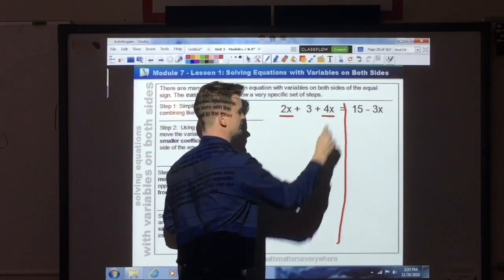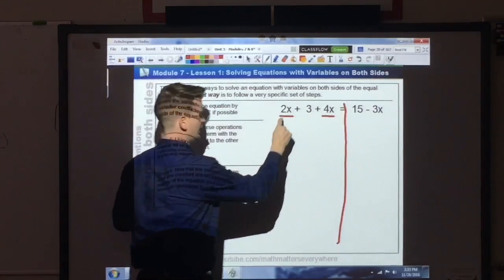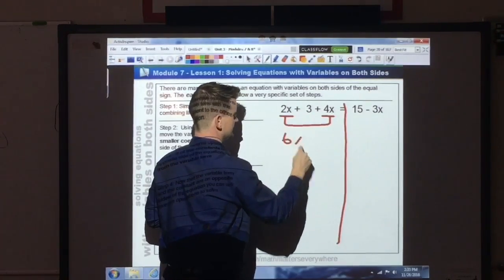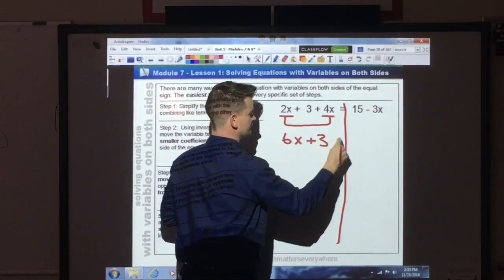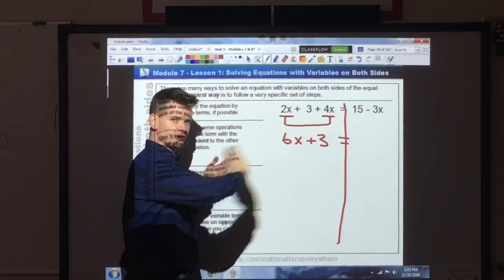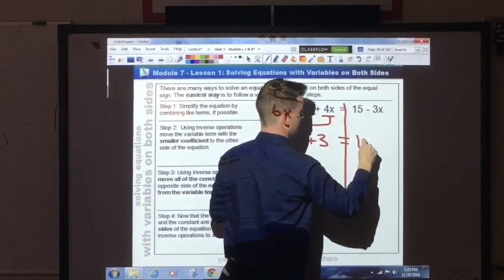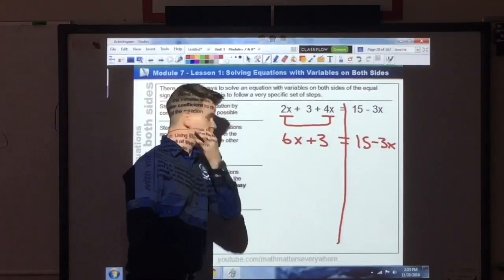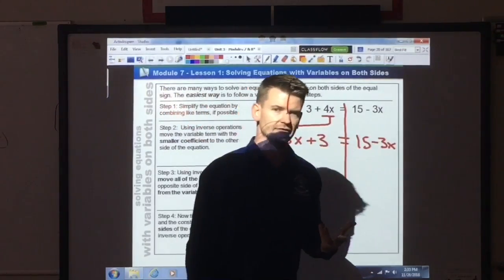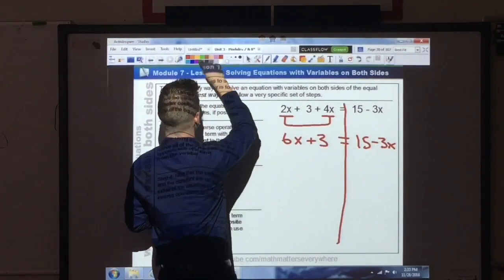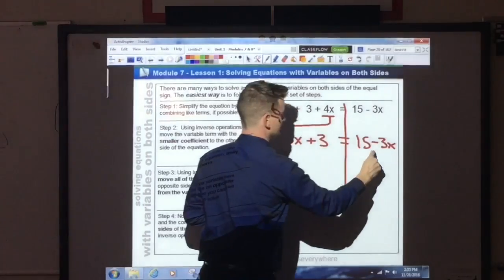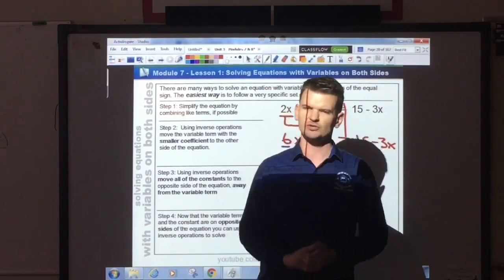Well, I have a variable term and a variable term here. I will combine those and I'll get 6x. I bring down the positive 3 and the equal sign. I'm working from left to right. I bring down the 15 minus 3x. Once I get here and there's no further simplification needed to solve it, I then look at my coefficients. And my coefficients are 6 and negative 3.